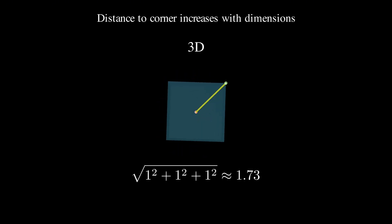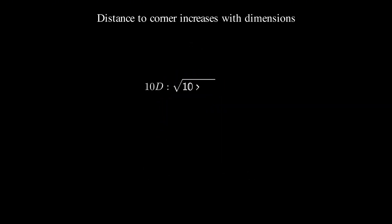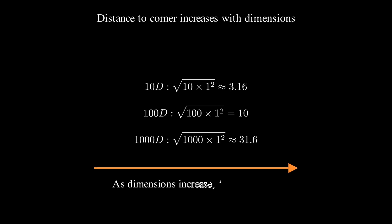If we keep going to higher dimensions, in a 10-dimensional hypercube, this distance becomes the square root of 10, approximately 3.12. In 100 dimensions, that's the square root of 100, which equals 10. And in a thousand dimensions, that's the square root of 1000, approximately 31.62.